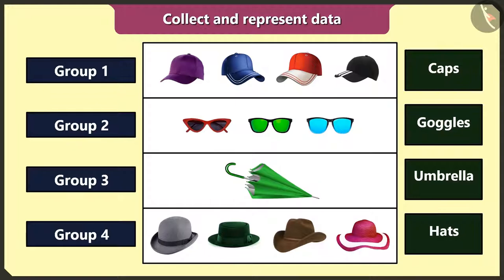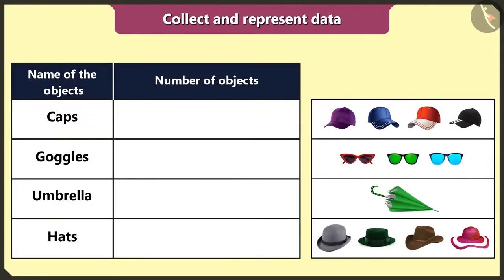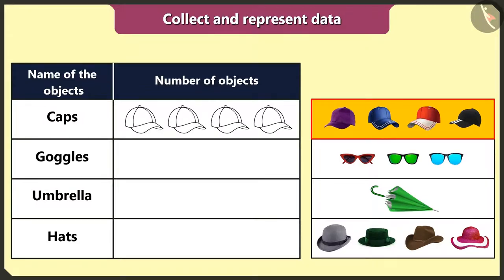Now I will count the objects in each group. I have four caps, three goggles, one umbrella, and four hats. Now I will create a table like this and represent all the data in it. There are four caps in the table, so I will draw four caps.